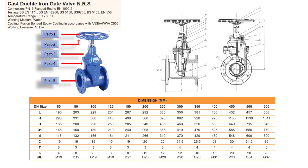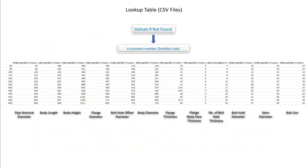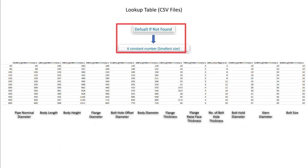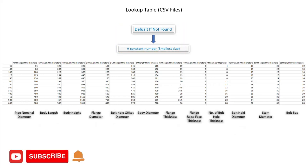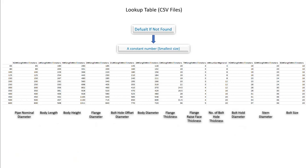I refer to this manufacturer's specifications to create a CSV file. This is a lookup table CSV file. Its data are referred from the manufacturer's specifications. I use a constant number, the smallest size, for default if not found. Before going to Revit, I would like to request you to subscribe to the channel and click the notification bell for the next video. OK, let's go to Revit.